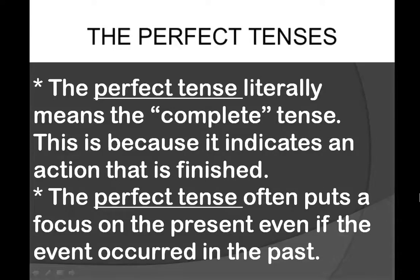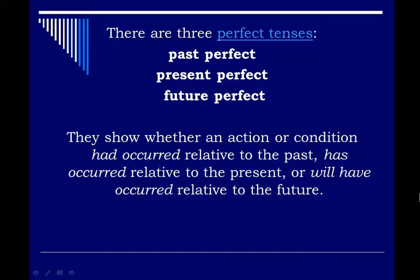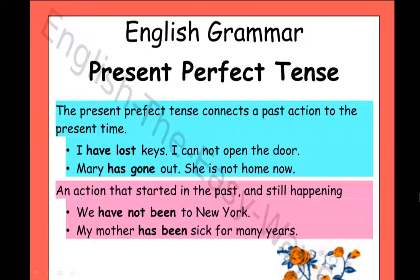In the perfect tense, it shows us the past event, but we have to focus on the present. In the perfect tense, there are three parts: past perfect tense, present perfect tense, and future perfect tense. First one is the present perfect tense. In this tense, it connects a past action to the present action. By the example you can understand very easily.